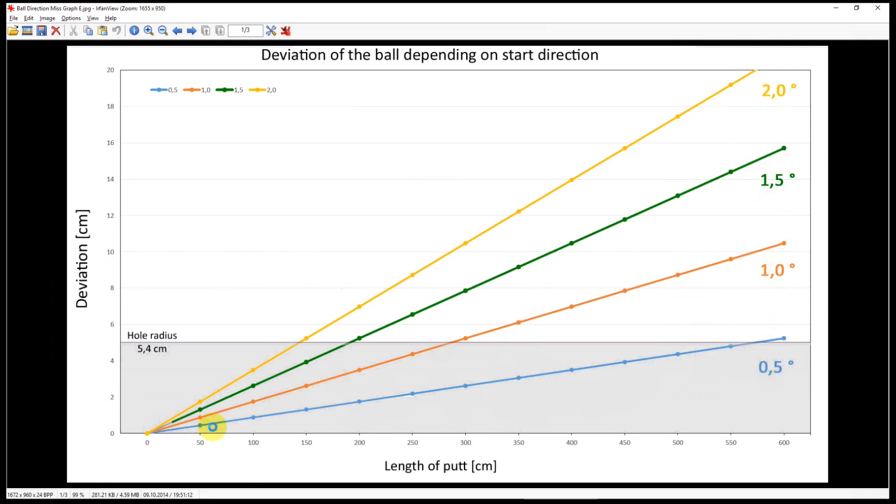If we take, for example, a ball starting one degree off the line, and the gray range down here is the radius of the hole, which is 5.4 centimeters, then we see that with a ball starting one degree off line, you will start missing the hole if the putt is longer than 3 meters.